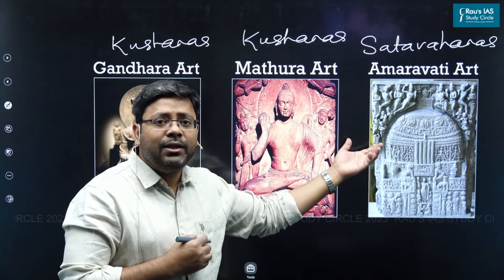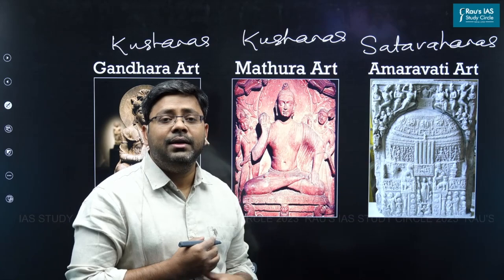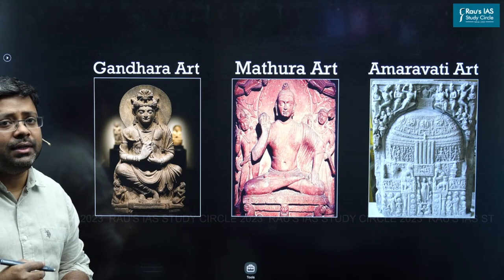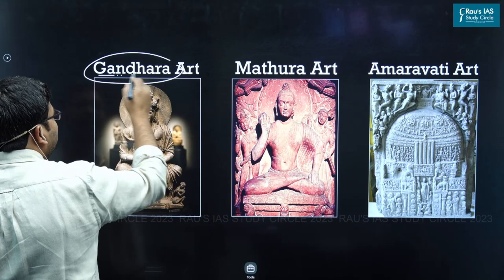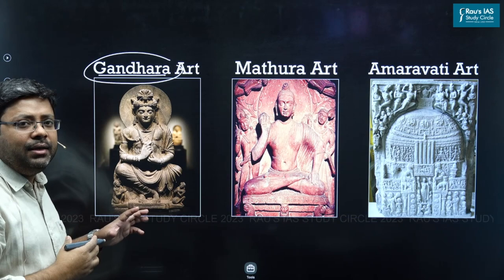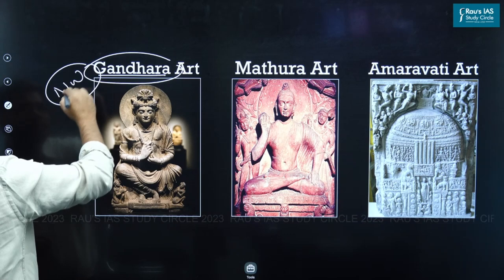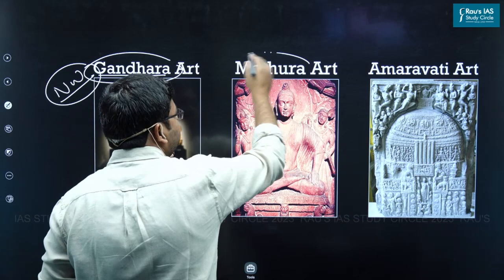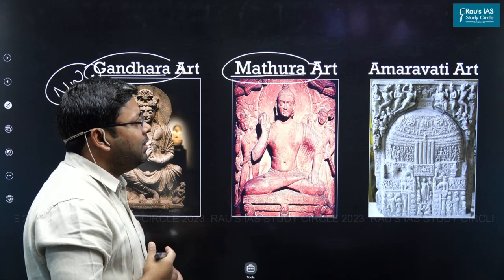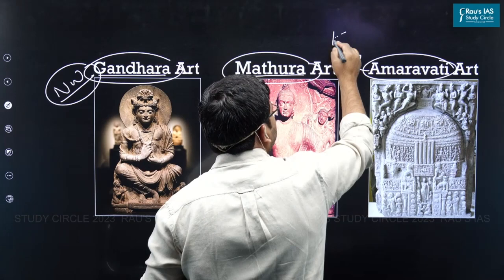The Satvahanas were the first power from the south to create an empire, and they patronized the Amaravati art form. By nomenclature, the Gandhara art developed in the Gandhara area, which in ancient times covered parts of Pakistan and Afghanistan — mainly the northwest part of the Indian subcontinent. The Mathura art form developed in the areas around Mathura, and the Amaravati art form mainly developed in the river basins of the Krishna and Godavari rivers.